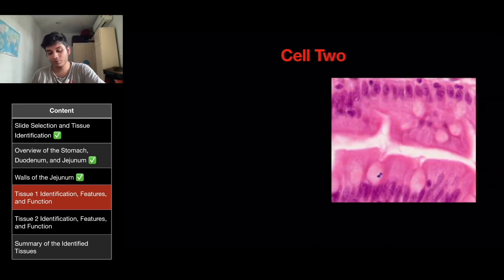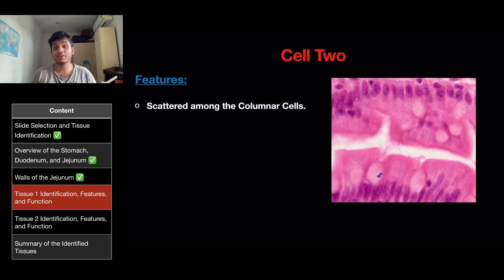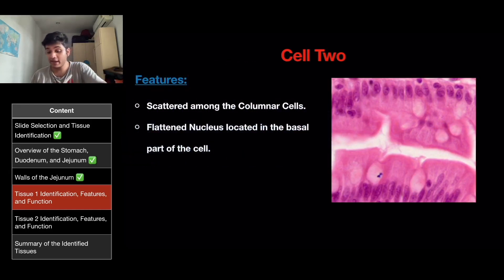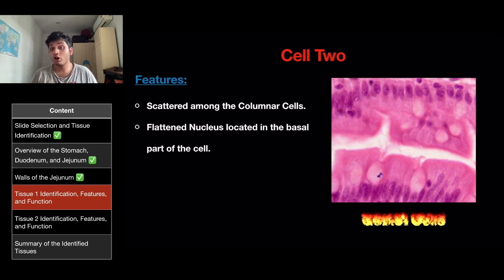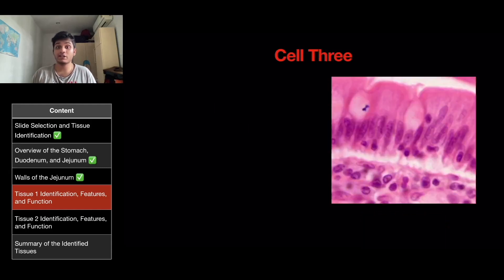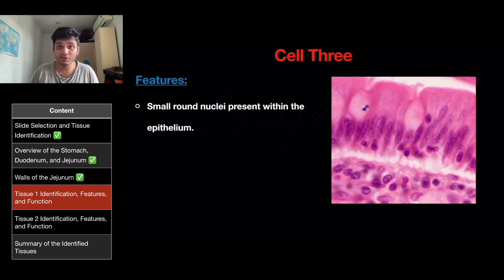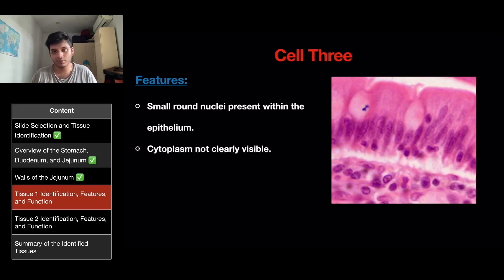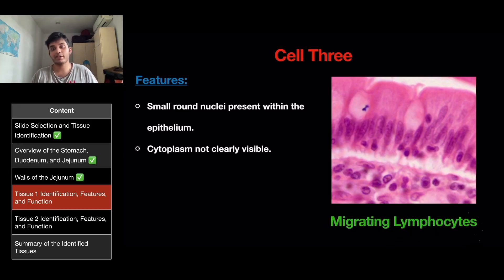Cell two consists of cells scattered among the columnar cells, with flattened nuclei located at the basal part of the cell — fitting the description of goblet cells. Cell three features small round nuclei present within the epithelium with cytoplasm that is not clearly visible, fitting the description of migrating lymphocytes.